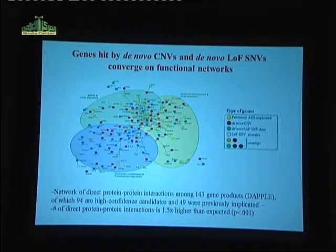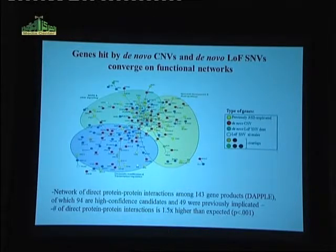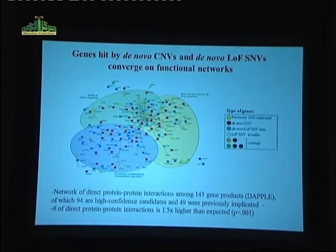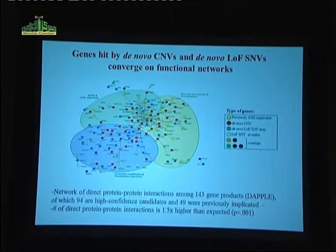We've summarized — in a paper currently in review — all of our loss-of-function sequence level mutations and copy number variants, de novo damaging mutations, using a network-based approach. Of all these damaging mutations, we can essentially cluster all of them into three large networks: neuronal development and axon guidance, a very large grouping shown in yellow; MAPK and other signaling; and chromatin modification and transcriptional regulation.